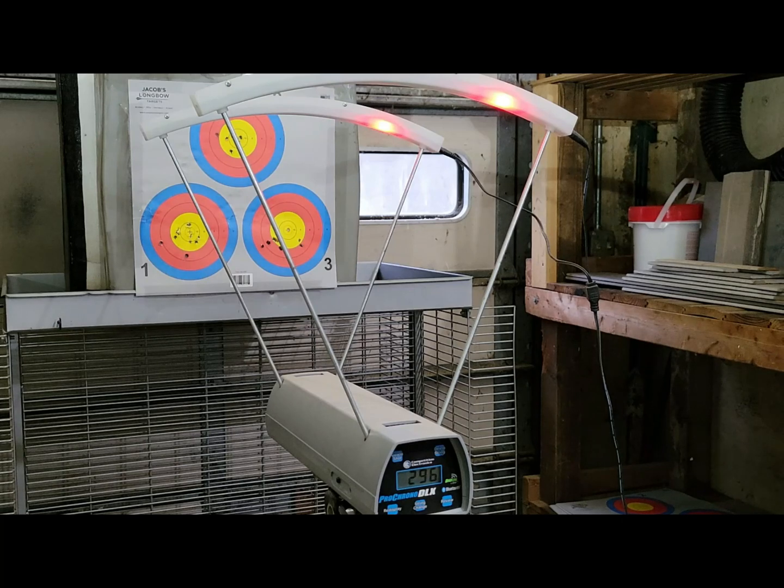All right, now we have the arrow with the standard insert. Again, it's a Black Eagle standard aluminum insert. These are carnivore arrows, 1,000th straightness. I've always found these to be very reliable, good arrows. All right, second shot here. See if we get the same speeds.